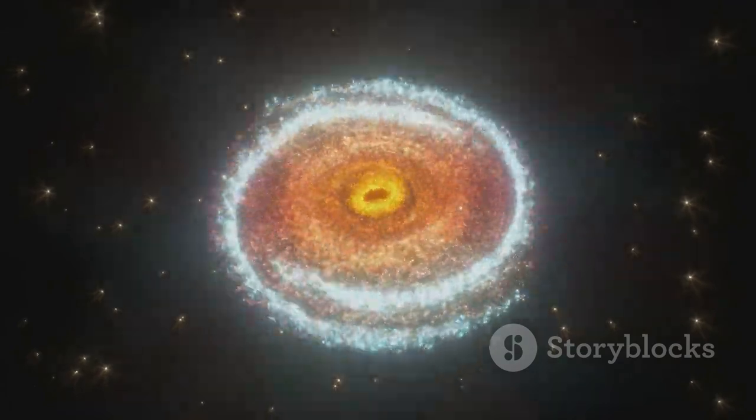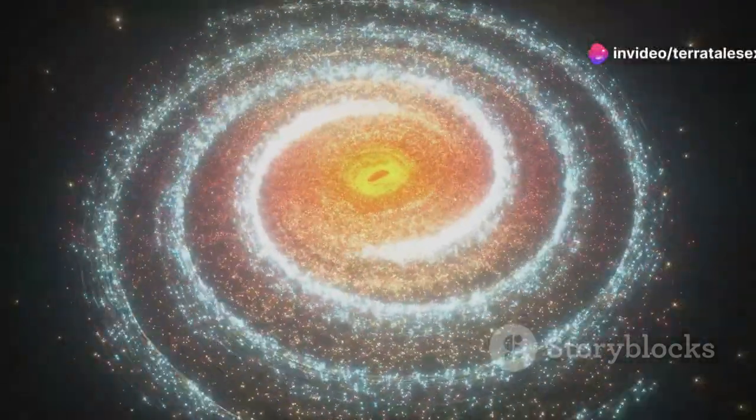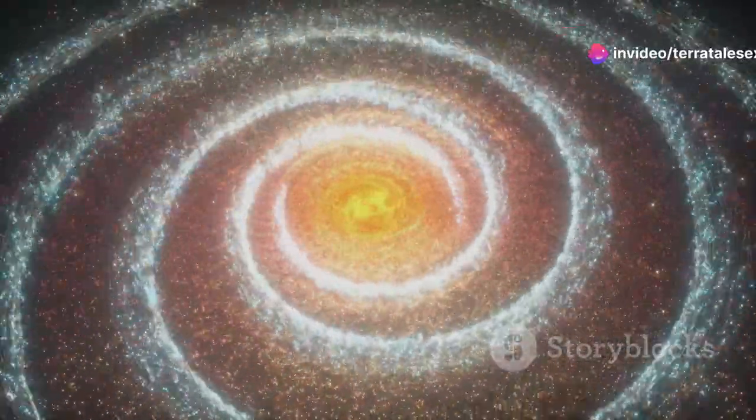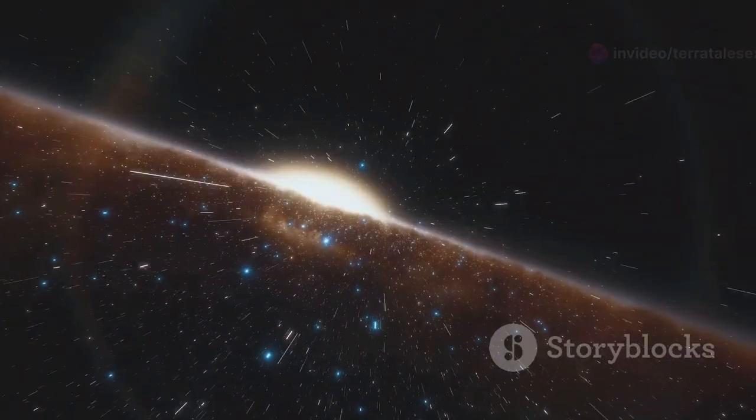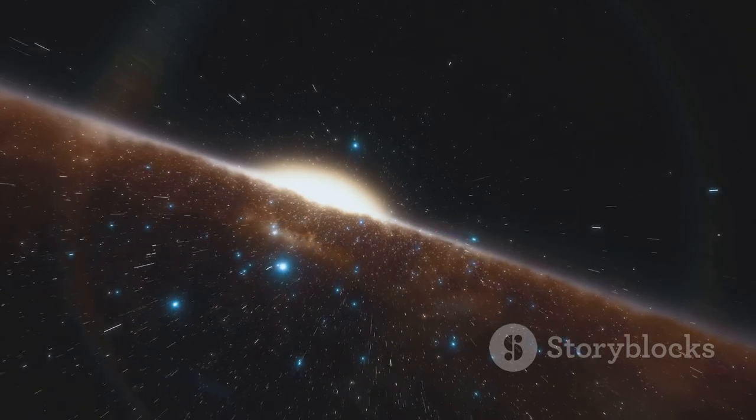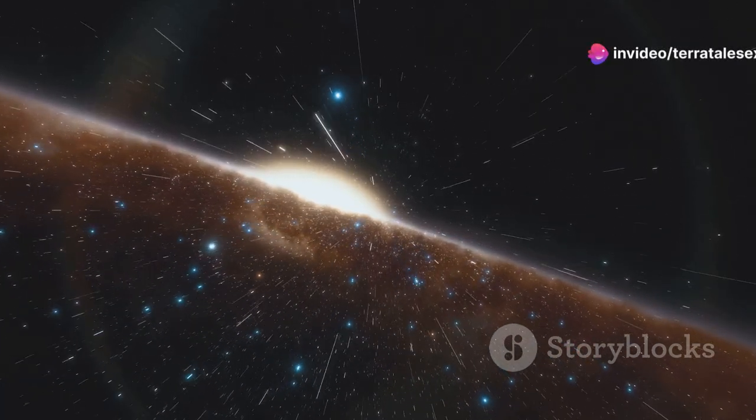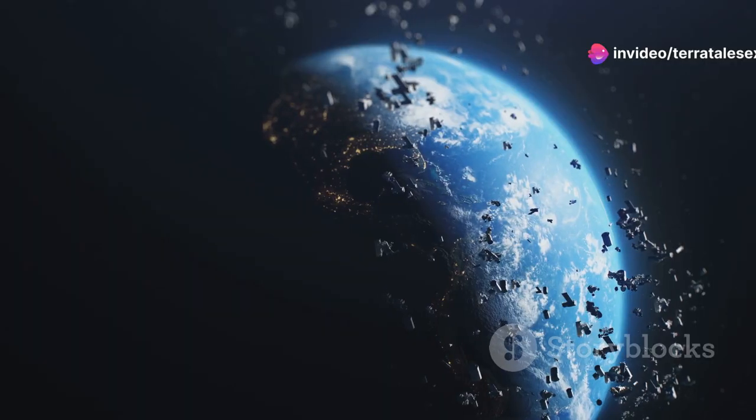In the outer regions of the swirling disk, particles began to clump together, forming small clusters. These clusters were the building blocks of planets and other celestial bodies. This process, known as accretion, marked the first step in Earth's formation. Accretion is a fundamental process in the creation of planets, where particles stick together and grow over time.